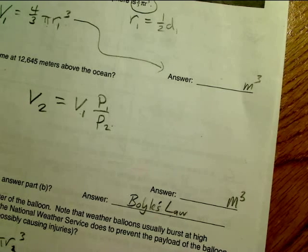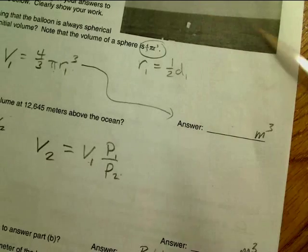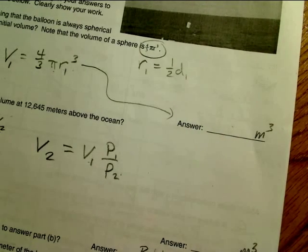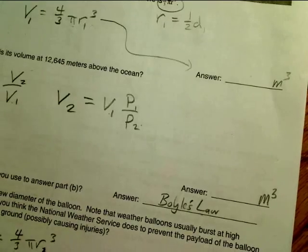In fact, weather balloons expand so much they burst, and then they have a parachute on the payload so that they come down to the ground slowly and don't injure anybody accidentally.